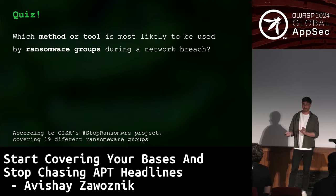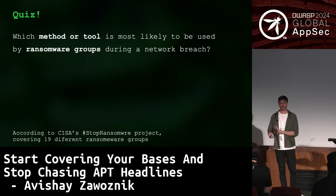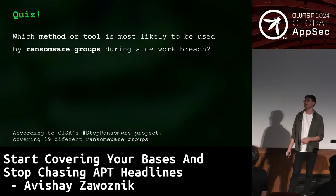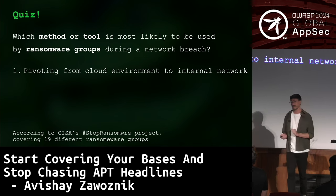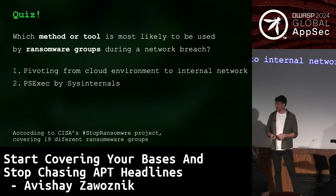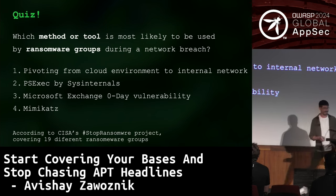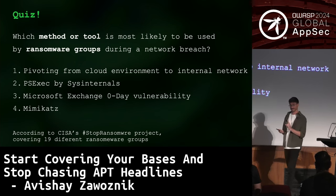By a show of hands, you'll have four options. I'd like you to raise your hand for whatever you think is the right answer to: which method or tool is most likely used by ransomware groups during a network breach? We have four options: pivoting from cloud environment to internal network; PSExec by Sysinternals; Microsoft Exchange zero-day vulnerability; or Mimikatz. For every vote, I'd like to take a selfie with you, so you can't deny that you voted the wrong one.